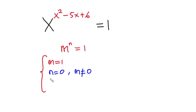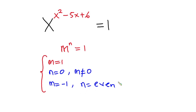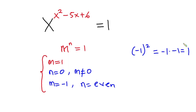Now let's come to the third case. We are saying that m should be equal to negative 1 and then n should be even. For instance, if you have negative 1 to the second power, this is the same as negative 1 times negative 1, which is equal to 1, because negative times negative is positive. So this statement is true when n is even, which is 2.